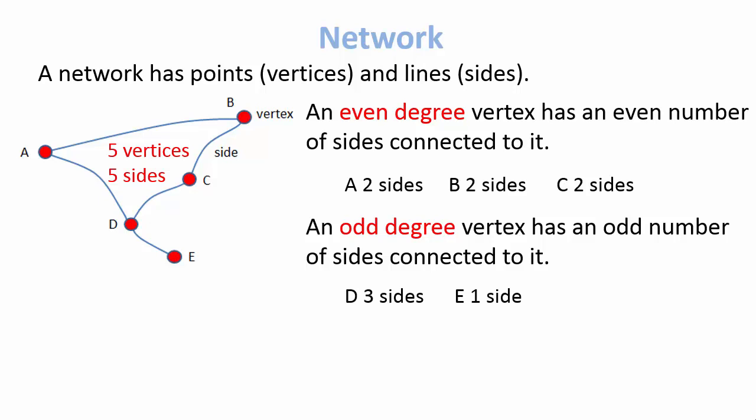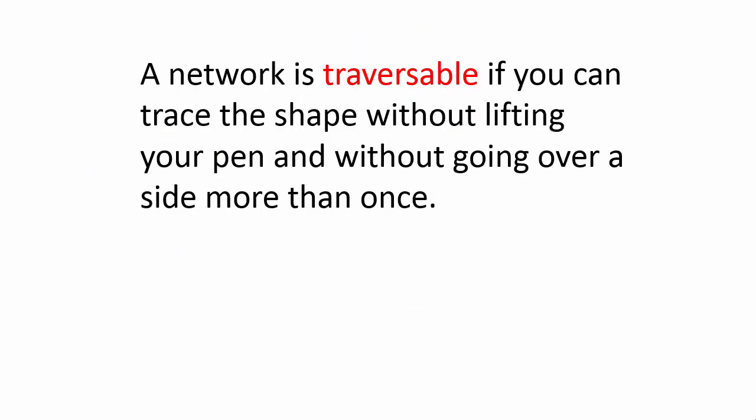An important definition here: we say that a network is traversable if we can go over every line exactly once. We can visit a vertex more than once, but each edge must be only visited once, which is very similar to our initial problem, wasn't it, where we go over the shape only once.